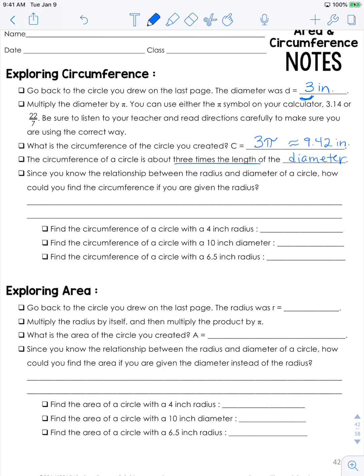So since you know the relationship between the radius and the diameter of a circle, how could you find the circumference if you are given the radius? All you have to do is simply double the radius, which gives you the diameter, then multiply by pi.